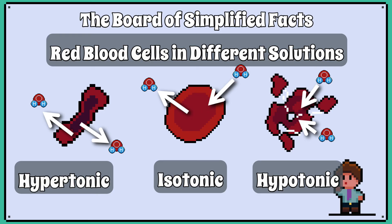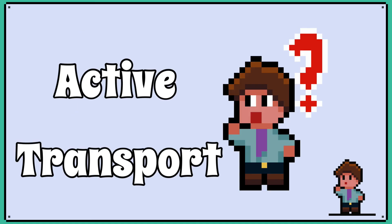On a side note regarding animal cells, because they have no cell wall, placing an animal cell into a hypotonic solution like pure water can cause the cell to burst. In the next video, we will look at active transport.